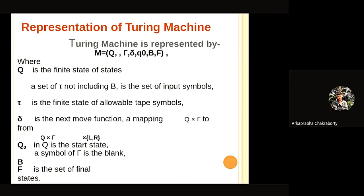And B is the symbol for blank, because as I said, it can have 1, 0 or a blank.